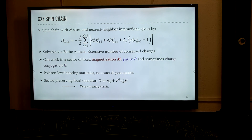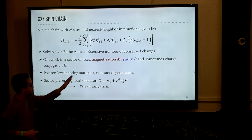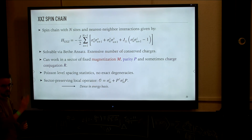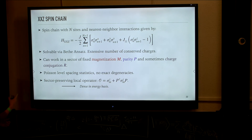The XXZ spin chain is just a chain of N spins with nearest-neighbor interactions, given by monomials of Pauli matrices, where there is one coupling strength in the Z direction that singles out the Z direction from the XY plane. This system is known to be solvable via Bethe ansatz and therefore has an extensive number of conserved charges. We can work in sectors of the Hilbert space with fixed magnetization and fixed parity, and sometimes even fixed charge conjugation.